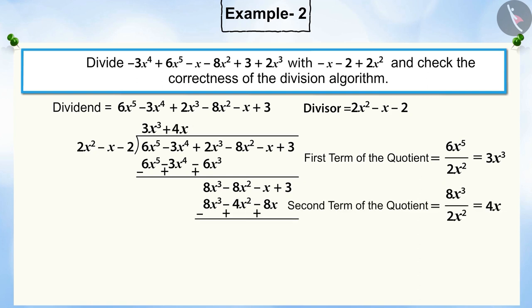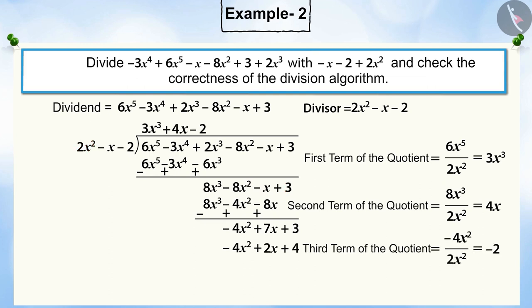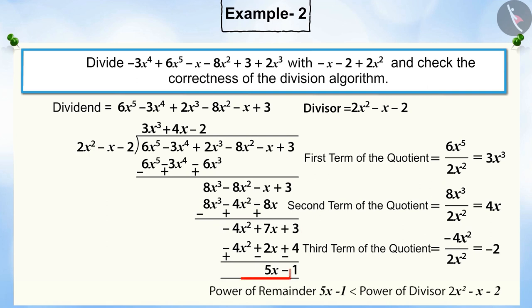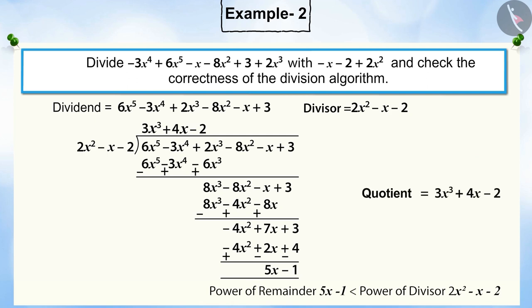Repeat the division process with the new dividend, which is 8x cubed minus 8x squared minus x plus 3. Now perform the division process with the remaining terms minus 4x squared plus 7x plus 3. The power of the remaining terms 5x minus 1 is less than the degree of the divisor, so we cannot proceed further. After the division process, we get 3x cubed plus 4x minus 2 as the quotient and 5x minus 1 as the remainder.